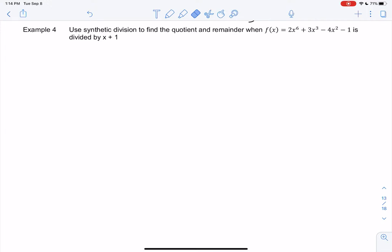So we're going to use synthetic division to find the quotient and remainder for 2x to the 6 plus 3x cubed minus 4x squared minus 1, and we're going to divide it by x plus 1.